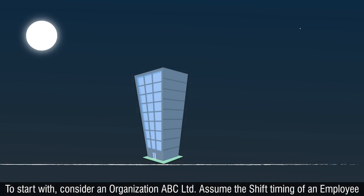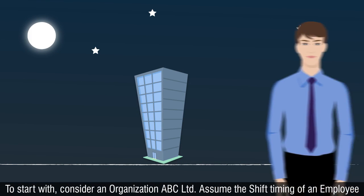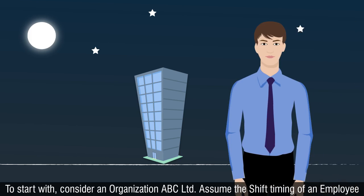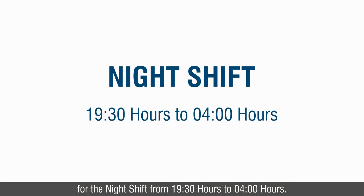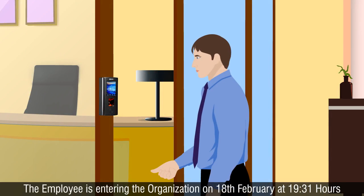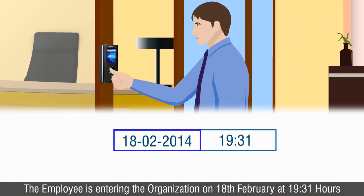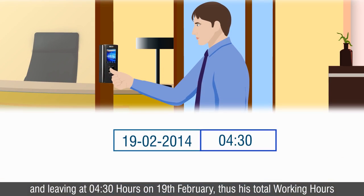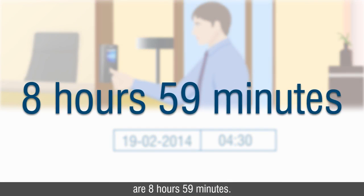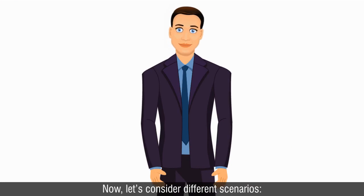To start with, consider an organization, ABC Limited. Assume the shift timing of an employee for the night shift from 1930 hours to 04 hours. The employee is entering the organization on 18th February at 1931 hours and leaving at 0430 hours on 19th February. Thus, his total working hours are 8 hours 59 minutes.